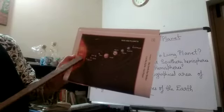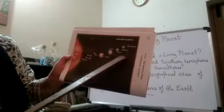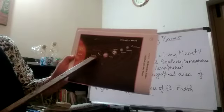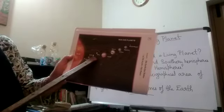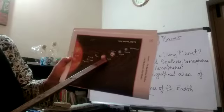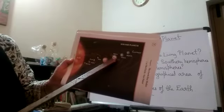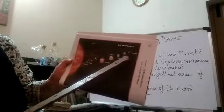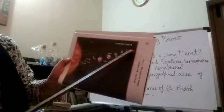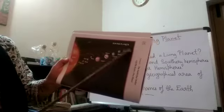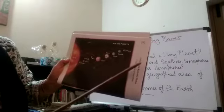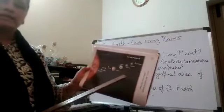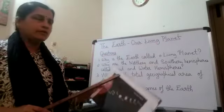These are the planets in the solar system: Mercury, Venus, Earth, Mars, Jupiter, Saturn, Uranus, Neptune. Pluto is not there — it is removed from the solar system.